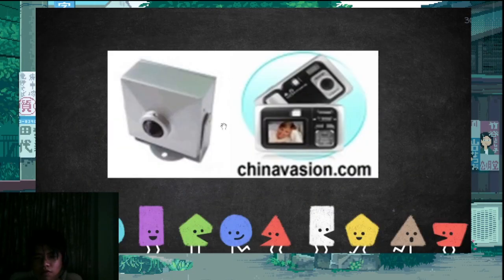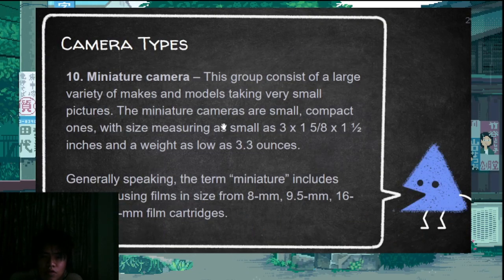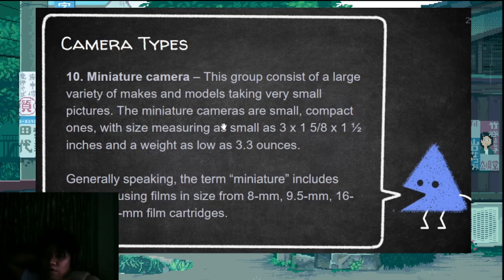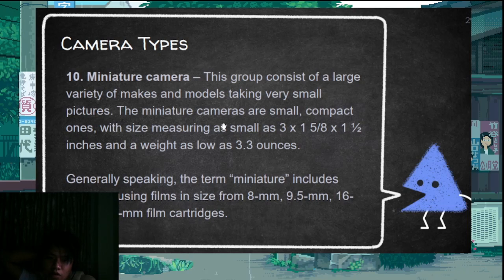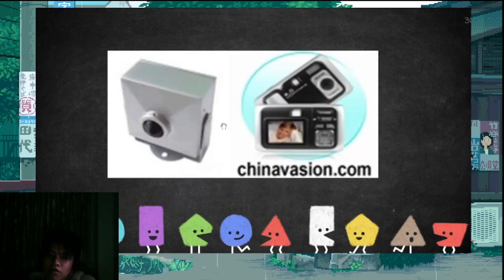There's also the miniature camera. It is used in surveillance work or police work. It's installed in a room to see the people there. The film sizes used in miniature cameras are 8mm, 9.5mm, or 8.35mm film cartridges — very small. These are also used in hotels for surveillance purposes.